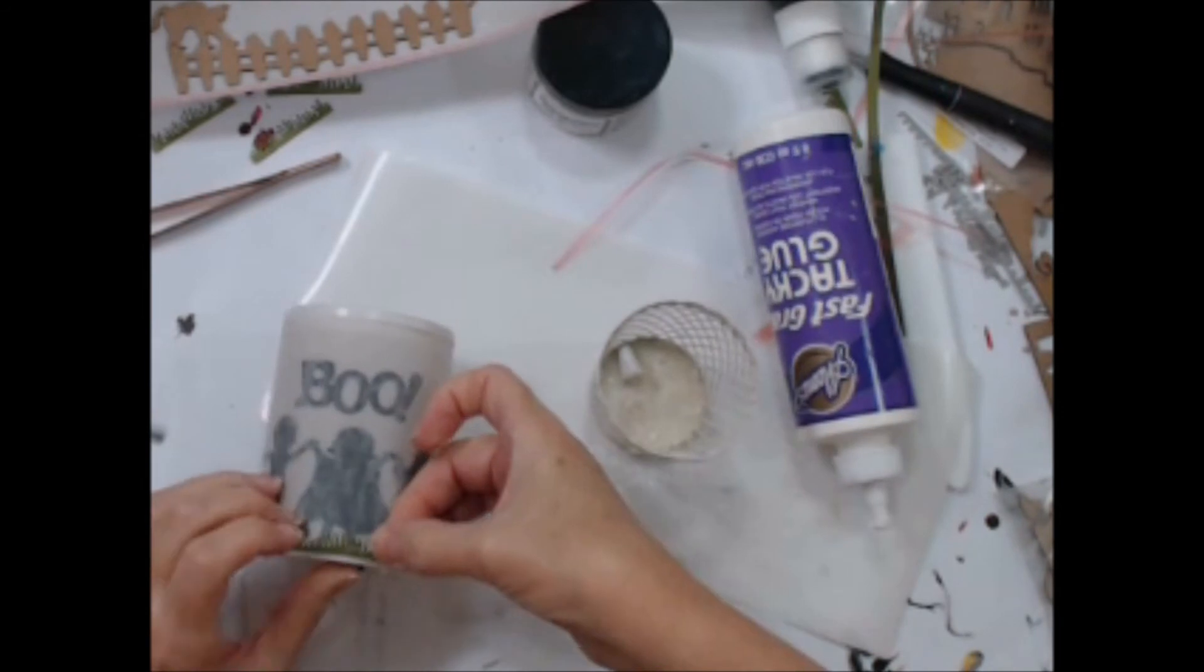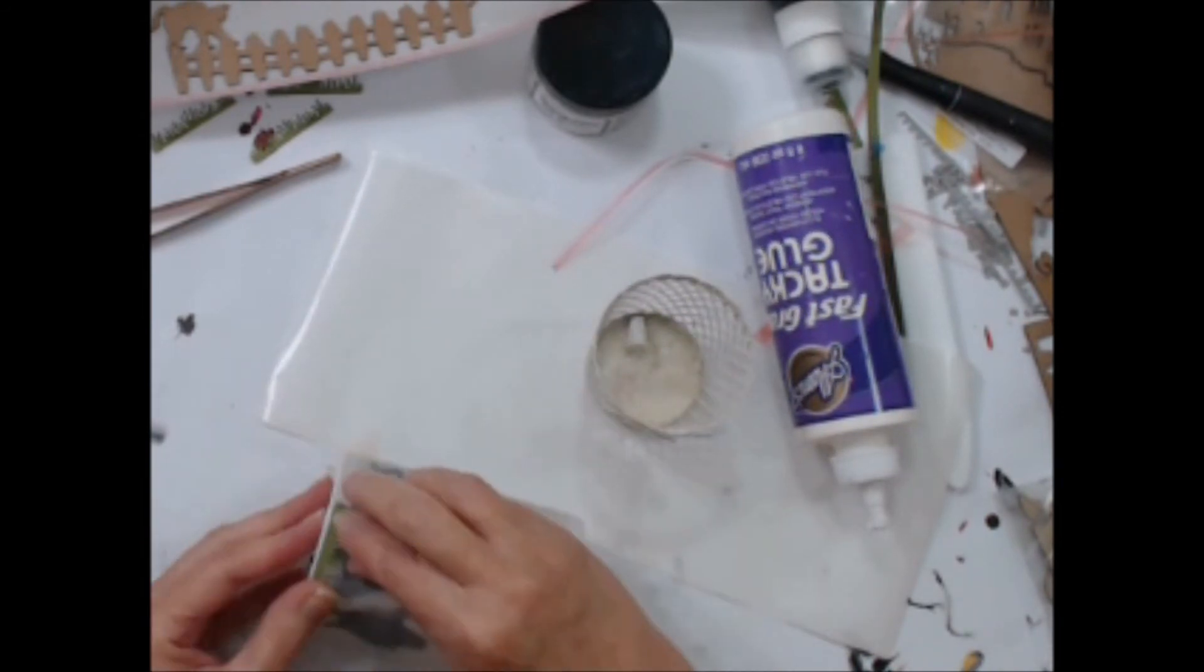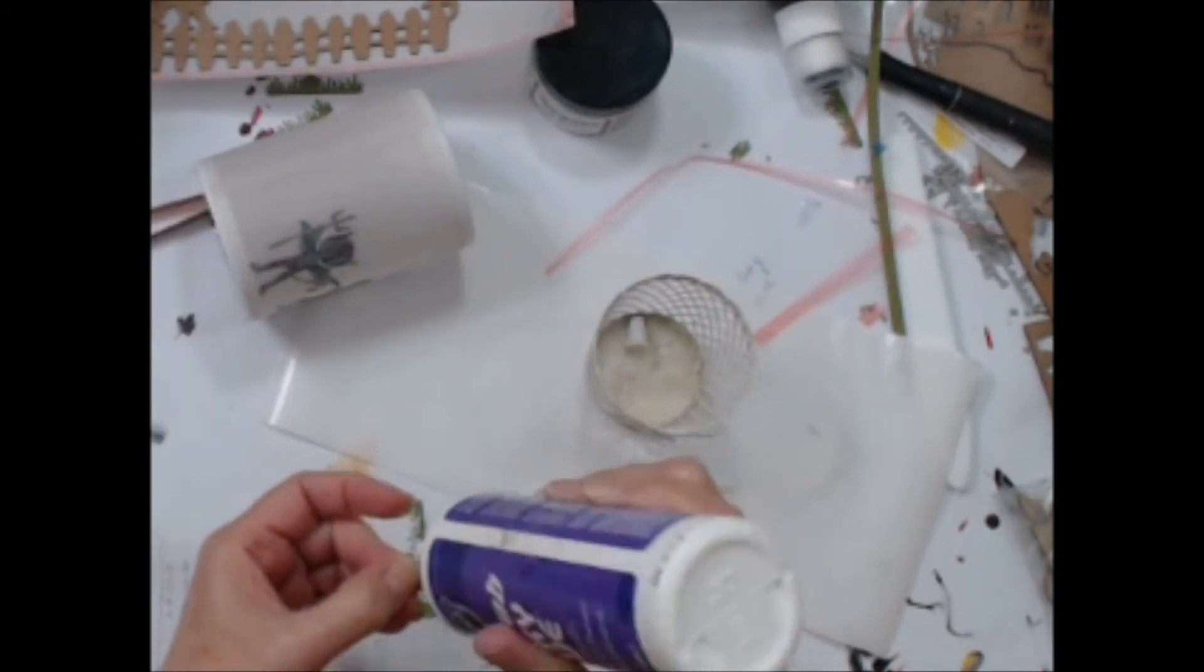Now I simply glued the grass pieces along the bottom edge, overlapping each piece as I went.